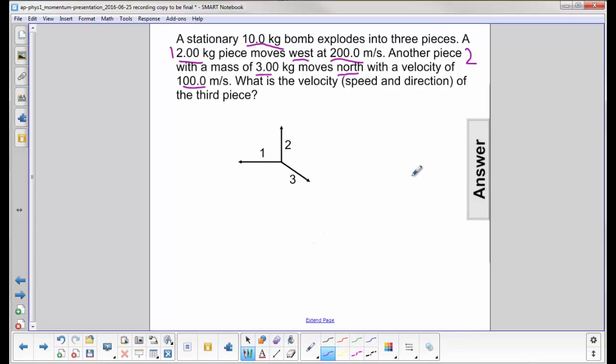The initial momentum of the bomb is zero. It is not moving. So we're given the final momentum of two of the pieces. One is in the negative x direction, one is in the positive y.